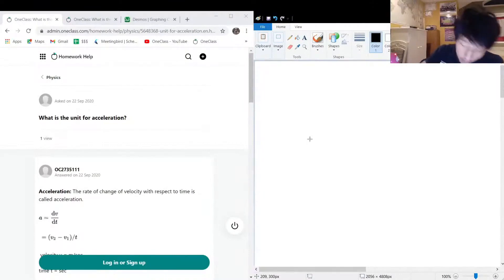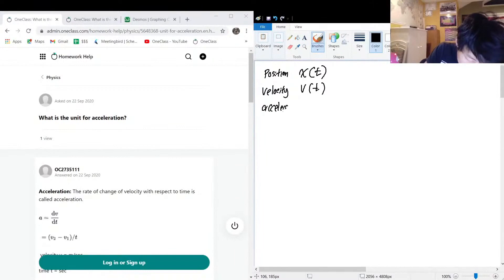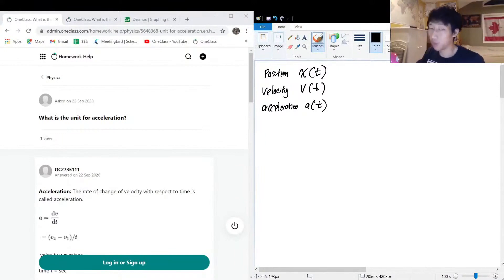So we have position or I'll first define our variables: we have position x(t), velocity v(t), and acceleration a(t). Now why I write them all as functions with respect to t is because we'll need them to be functions with respect to t for them to be related at all.